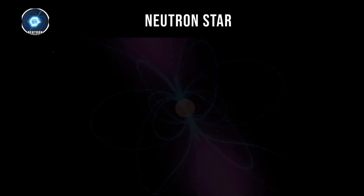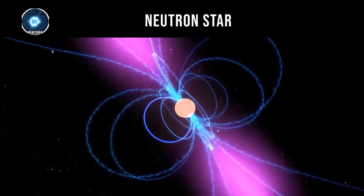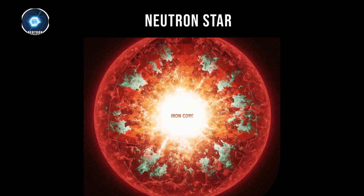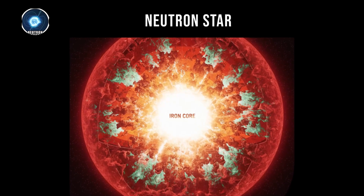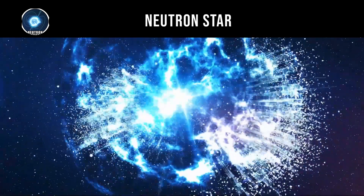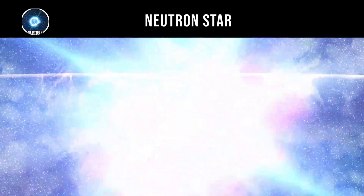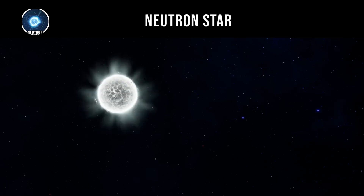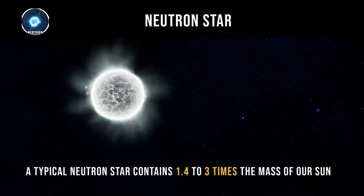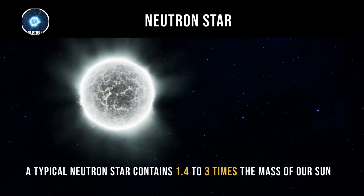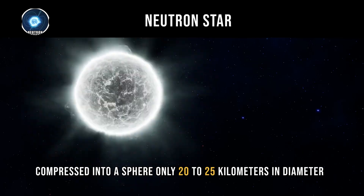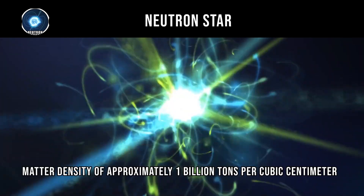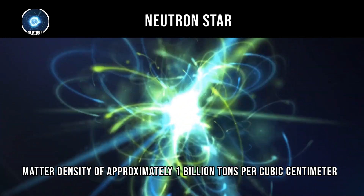Neutron star. Neutron stars form from the collapsed cores of supergiants during supernova explosions. When a supergiant's iron core can no longer sustain fusion, gravity overwhelms all other forces and crushes the core in less than one second. The core collapse is so violent that protons and electrons are forced together to form neutrons, creating an object composed almost entirely of neutrons. A typical neutron star contains 1.4 to 3 times the mass of our sun compressed into a sphere only 20 to 25 kilometers in diameter, creating matter density of approximately 1 billion tons per cubic centimeter.